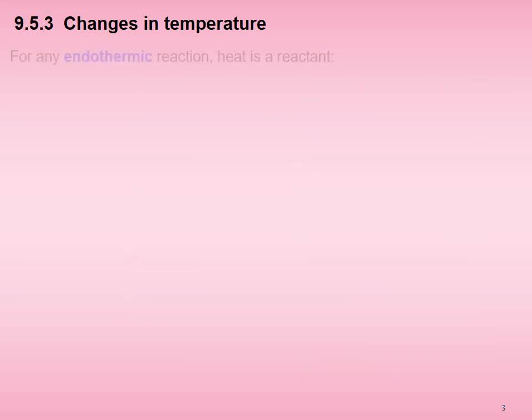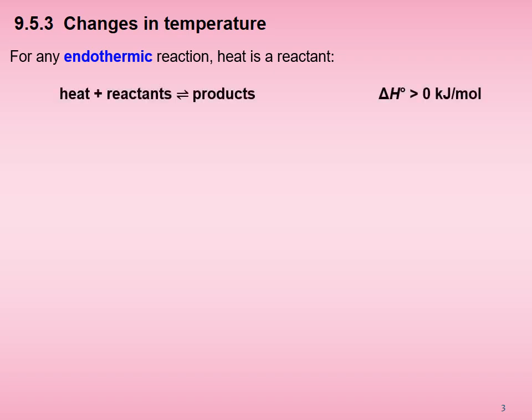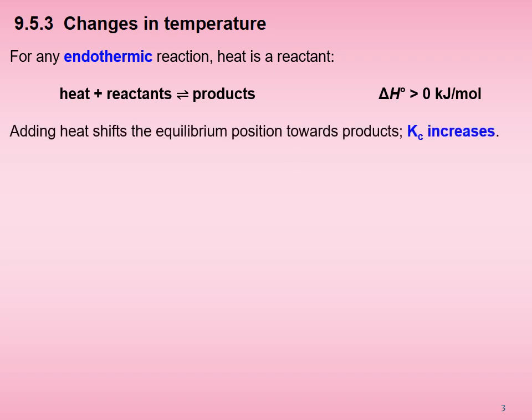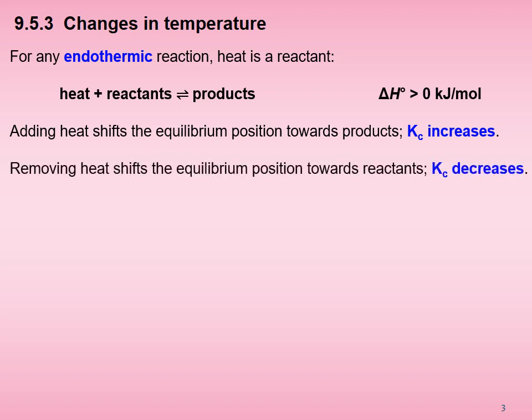For any endothermic reaction, heat is a reactant, written in the format: heat + reactants → products. The enthalpy change in standard state is greater than 0 kJ per mole — that is, it is positive. Adding heat shifts the equilibrium position towards products and Kc increases. Removing heat shifts the equilibrium position towards reactants and Kc decreases.